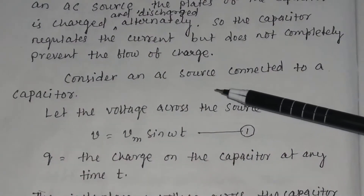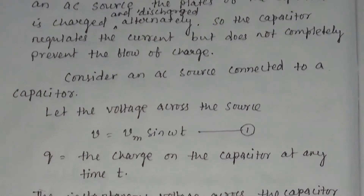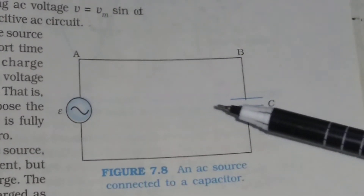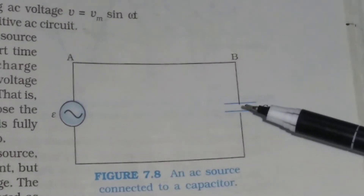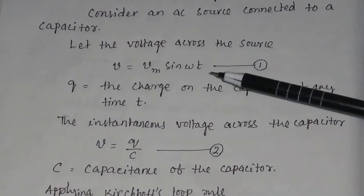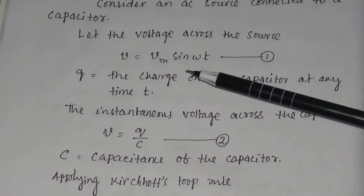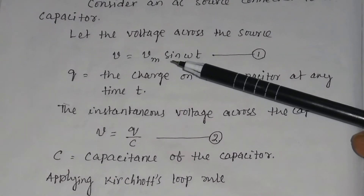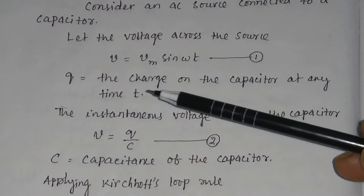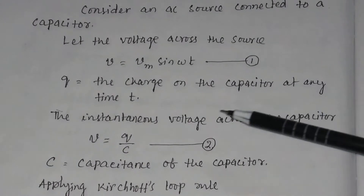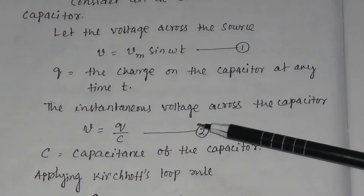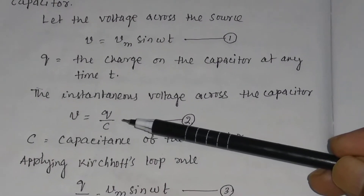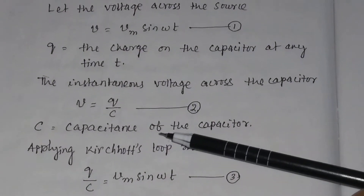Consider an AC source connected to a capacitor. As shown in the figure, this is the AC source and this is the capacitor. Let the voltage across the source V be given by V = Vm sin(ωt), where Vm is the maximum voltage. Let Q be the charge on the capacitor at any time t. The instantaneous voltage across the capacitor is given by V = Q/C, where C is the capacitance of the capacitor.